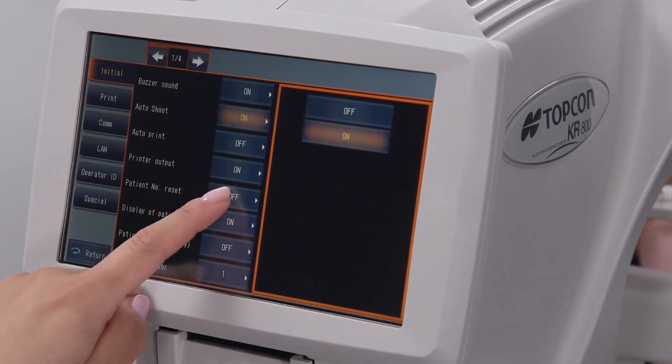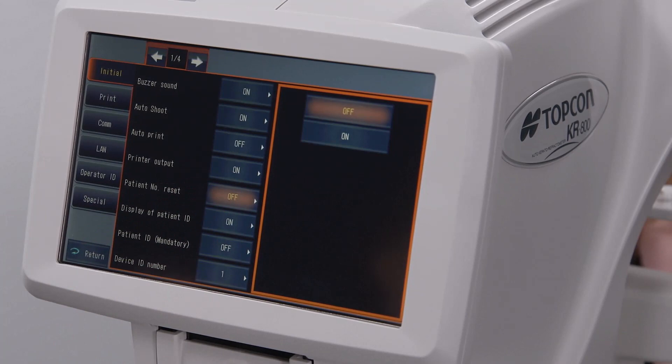Patient number reset determines whether the device will have all patient ID numbers be the same, or whether it will provide a new number for each patient. It's highly recommended to have this off, especially if the device is connected to CV5000 digital phoropter, so that each patient will have their own number on the printout and export to prevent confusion over which results belong to which patient.